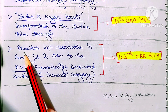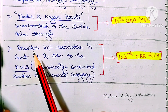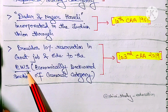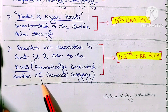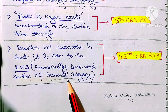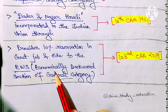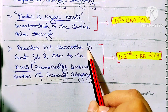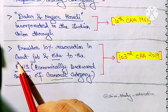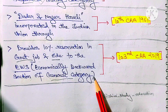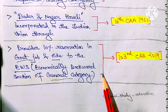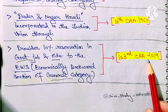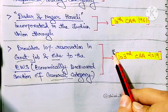The last point: the 103rd Constitution Amendment Act 2019 provides 10% reservation in government jobs and education to the Economically Weaker Section (EWS) of the general category. People in the general category who fall under the economically backward section will receive 10% reservation in government jobs and education through this amendment act.